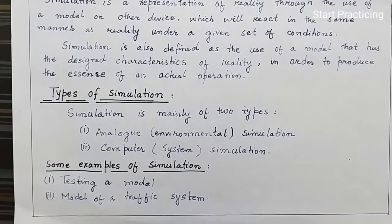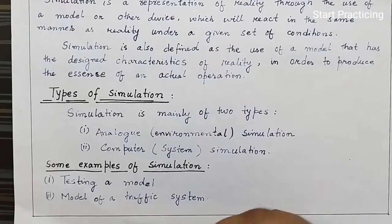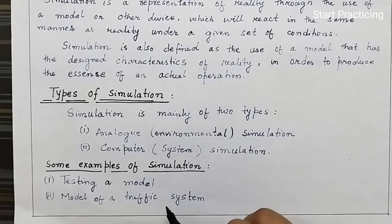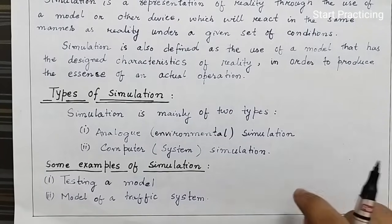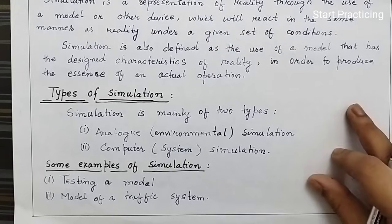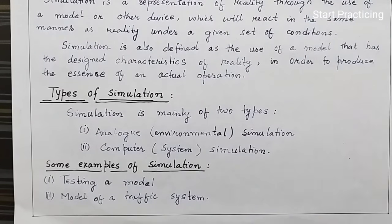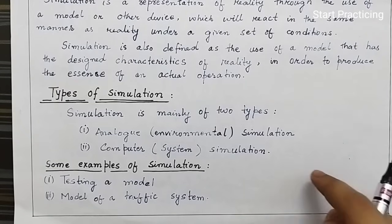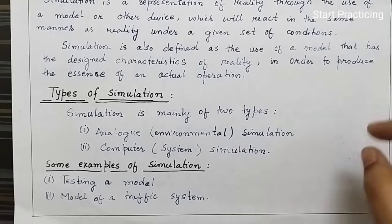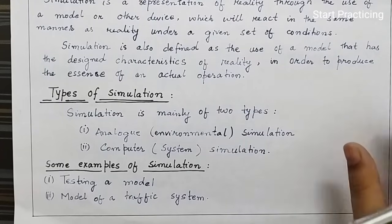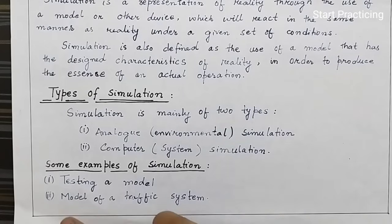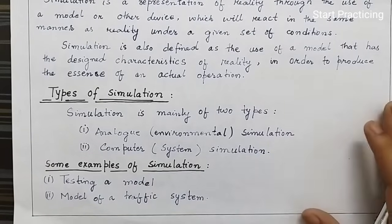Now some examples. The first example is testing a model. Where can you use simulation? You can use simulation in a model and in a model of a traffic system. These are two basic examples. A traffic system example: if a road is made, you first make a small model to find which road layout to use and what signals to place, and after that build the traffic system. This is an example of a model of a traffic system.